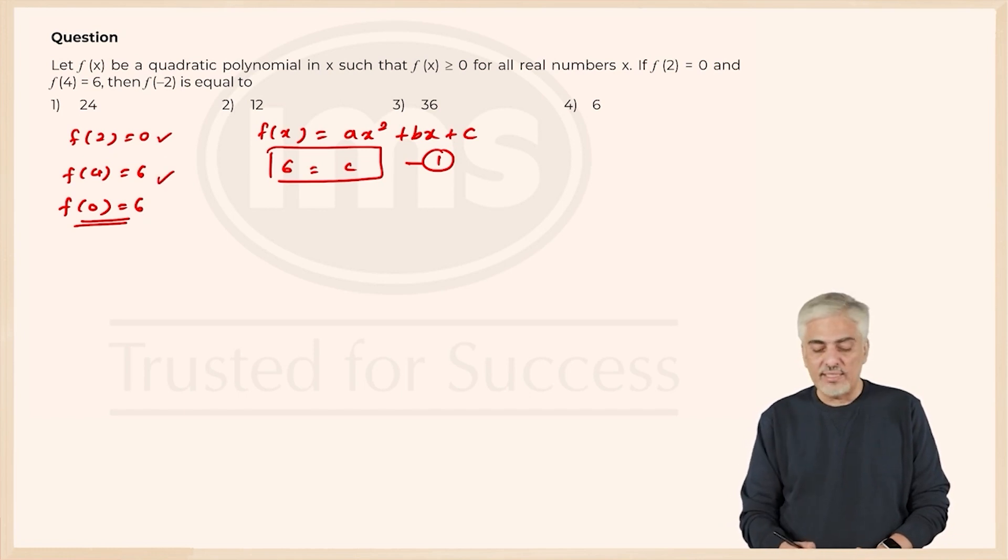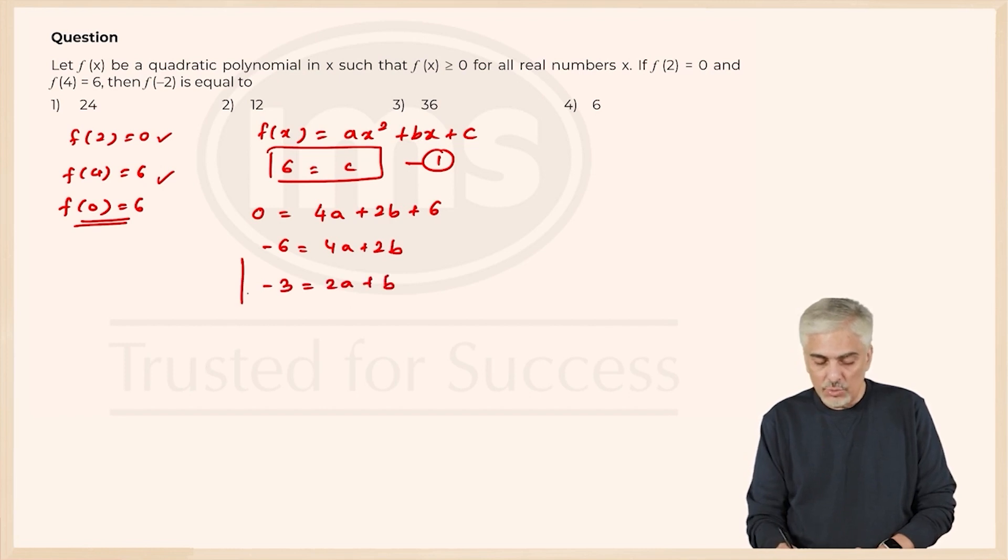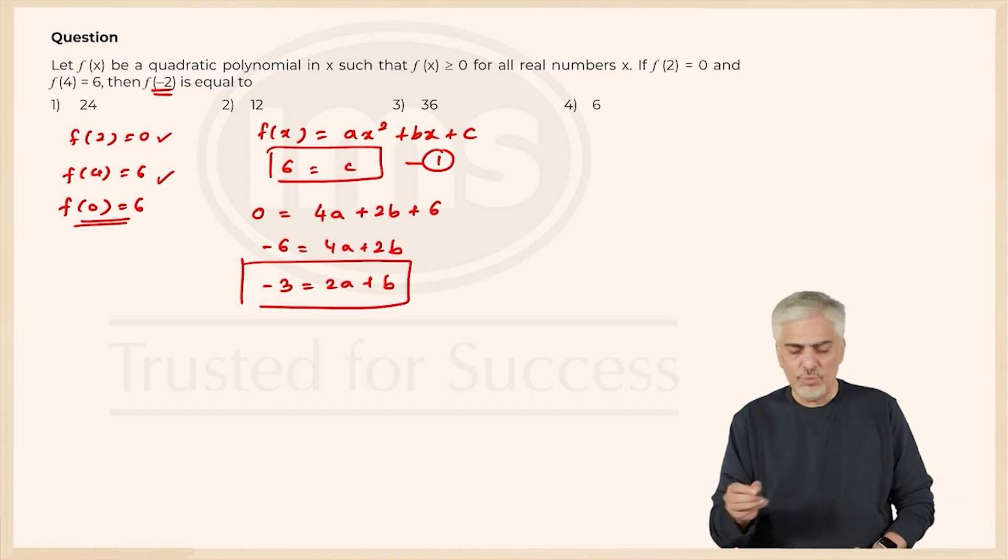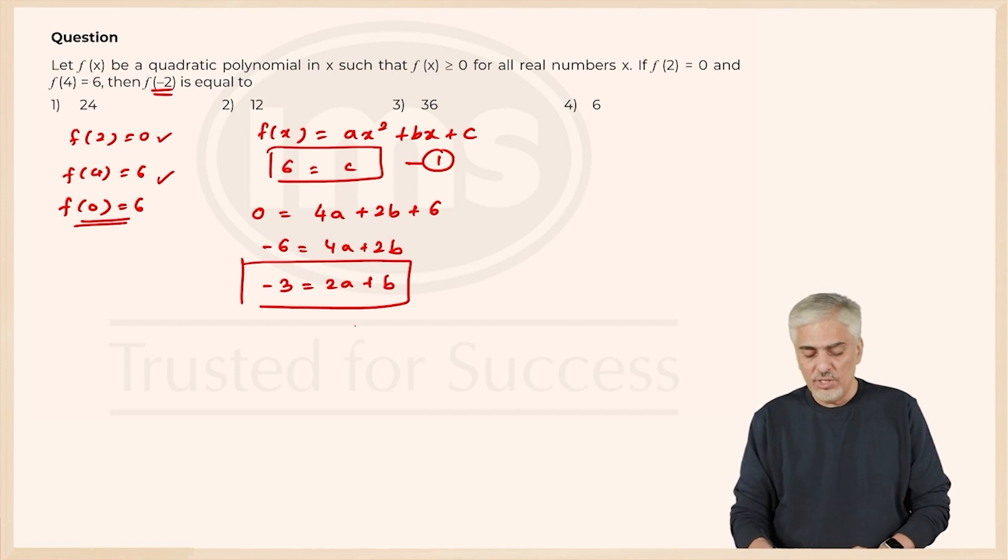Now let us use these two f of 2 is 0. So f of 2 is 0. So 0 is equal to 4 a plus 2 b plus 6. So I have got minus 6 is equal to 4 a plus 2 b minus 3 is equal to 2 a plus b. So we have got that.